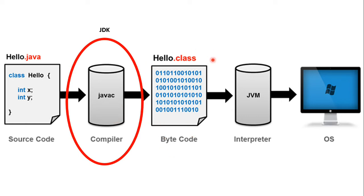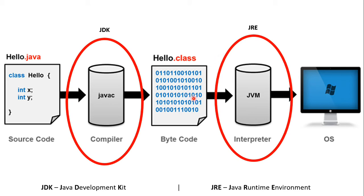The source code is the high-level language. The source code is compiled into bytecode, which creates a file with the .class extension.